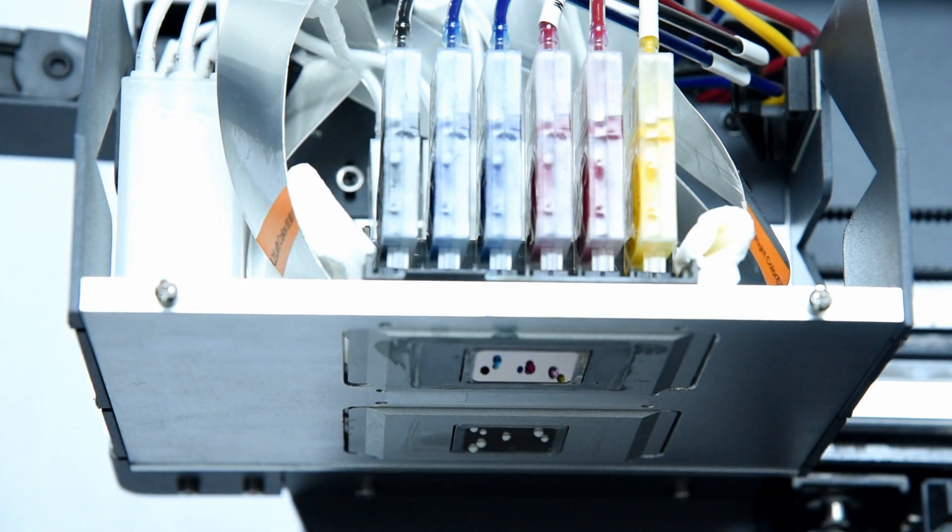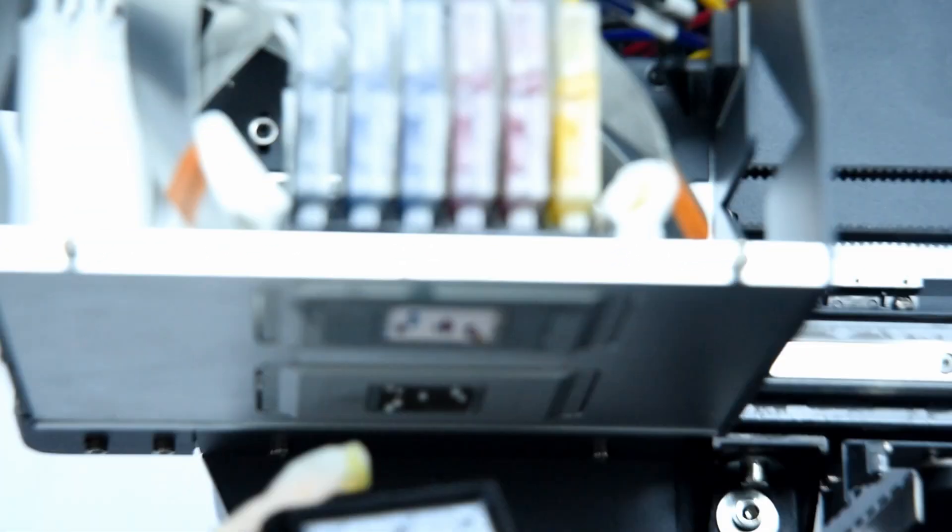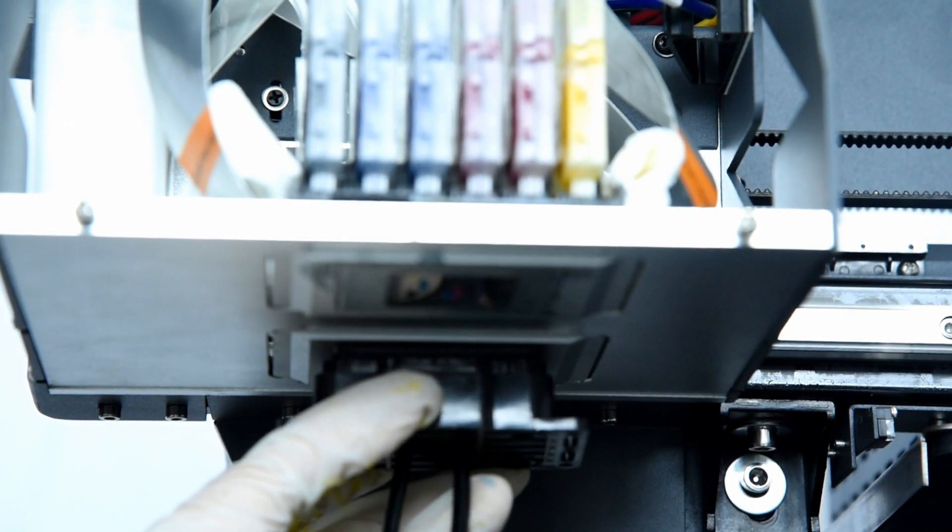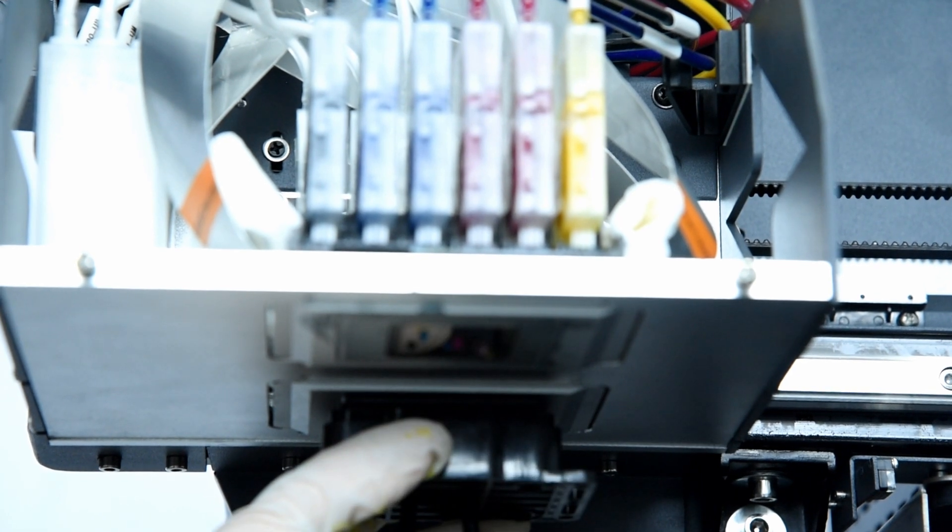First we use the hand making tools with injection and damper, with the cap station. We hold the tools this way and put it on the surface of the white print head, and start to pull the white ink out.